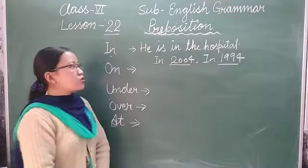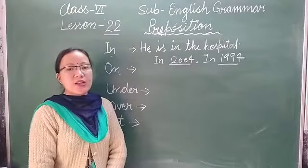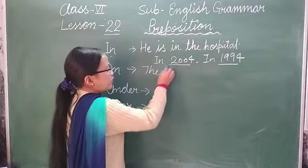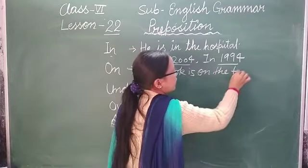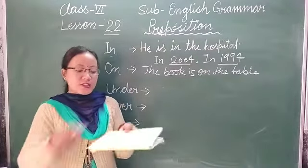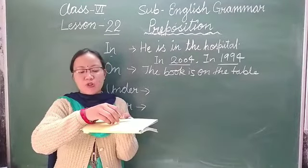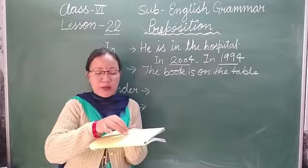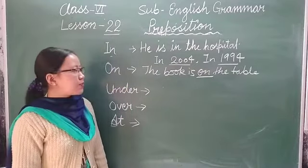Next is 'on'. We use 'on' in two ways: first, to show position or state, and second, for time. For position: 'The book is on the table' — when something is resting on a surface and touching it. For example, if chalk is on the book, we say 'the chalk is on the book' because it is touching the surface.